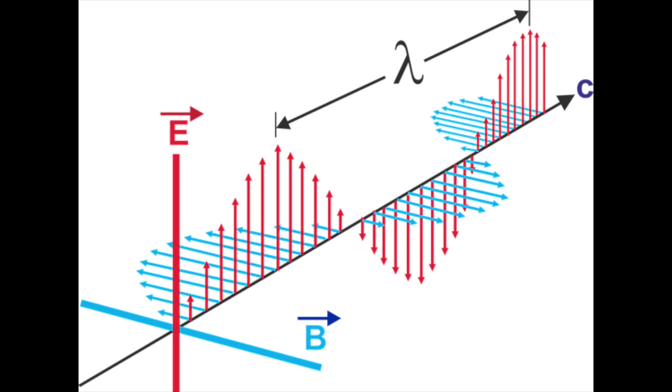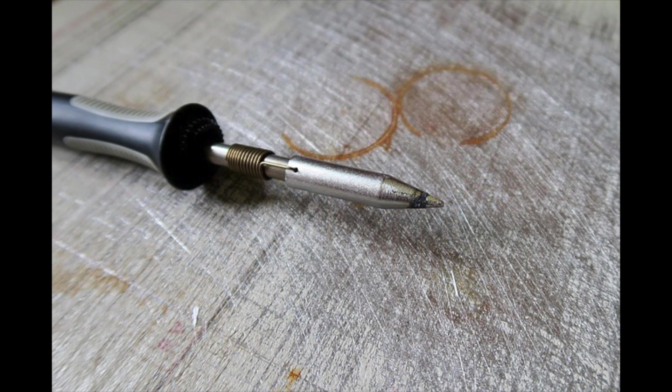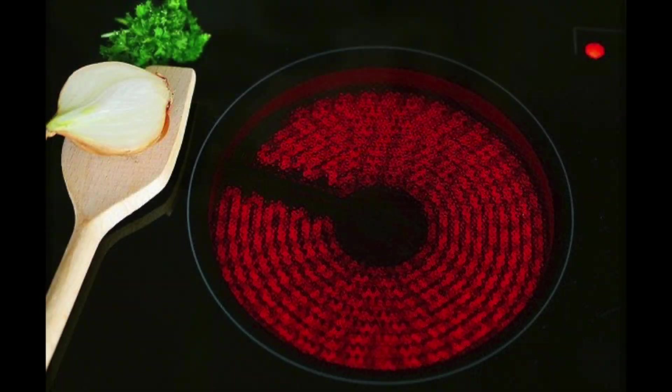Infrared radiation is a part of the electromagnetic spectrum that lies between visible light and microwaves. As objects become hotter, they produce increasingly shorter infrared wavelengths until they become hot enough to give off visible light.